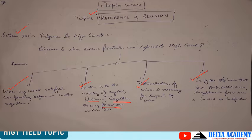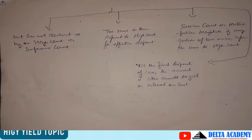Then that particular court is of the opinion that such Act, Ordinance, Regulation or provision is invalid or inoperative. Aise cases mein voh particular court us particular case ko High Court ko refer kar deti hai — yeh dekhne ke liye ki that particular thing has not been held invalid or inoperative by the High Court or the Supreme Court. Jo bhi High Court ka decision hoga, trial court ko uska compliance karna padega. The same is then referred to the High Court for effective disposal.